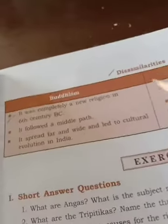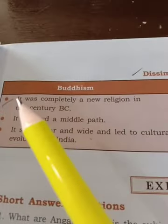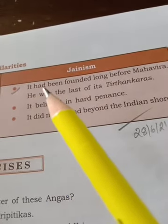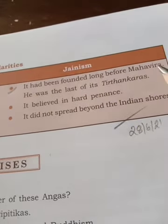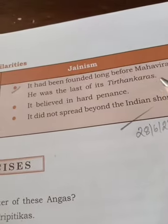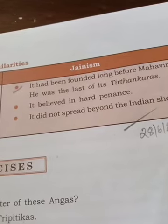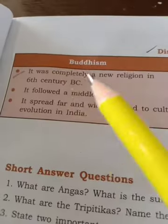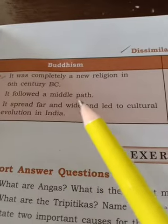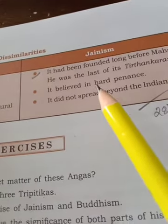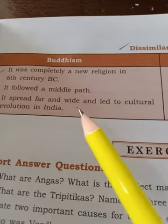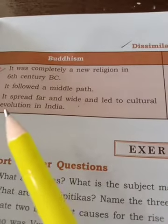Now we see some dissimilarities between Buddhism and Jainism. First, Buddhism was completely a new religion in the 6th century BC, while Jainism had been founded long before Mahavira. He was the last of its Tirthankaras — the 24th Tirthankara — and there were 23 Tirthankaras before him. Second, Buddhism followed a middle path, while Jainism believed in hard penance.